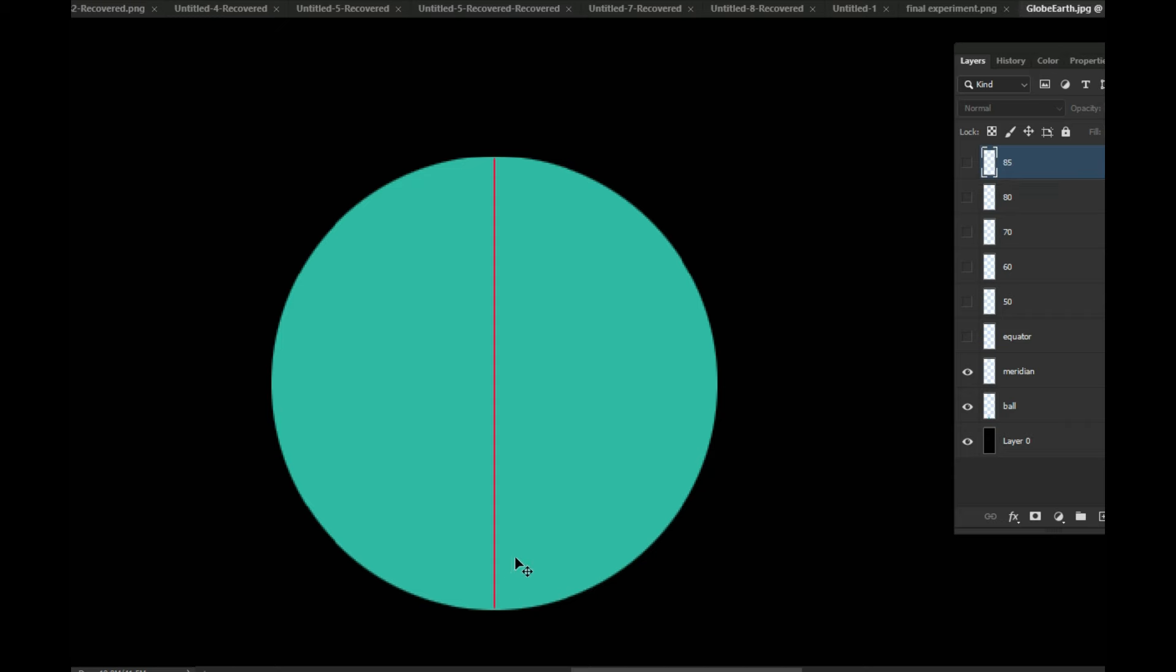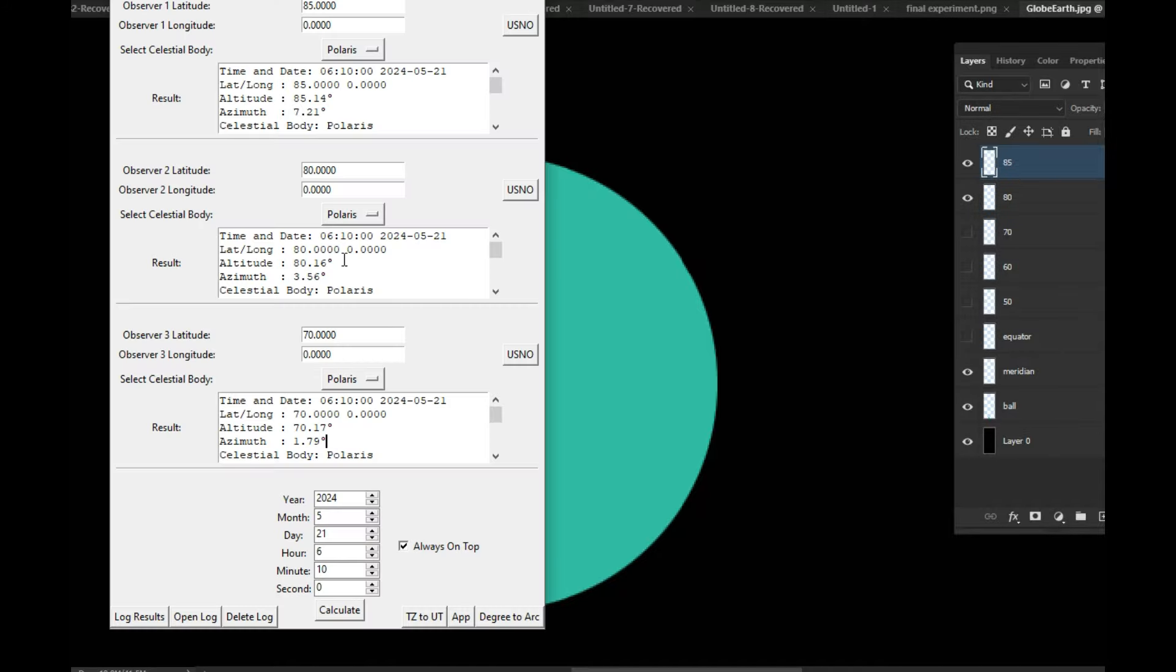This is the prime meridian, and this is Polaris at the 85th latitude north, which is at an angle of 7.2 degrees. This is the 80th latitude at an angle of 3.56 degrees. And this is the 70th latitude, which is at an angle of 1.79 degrees.